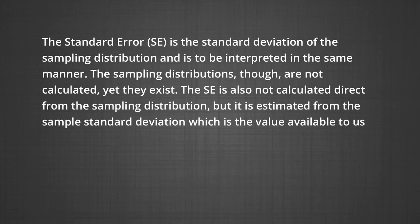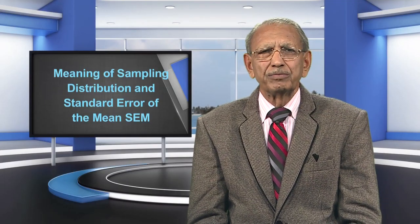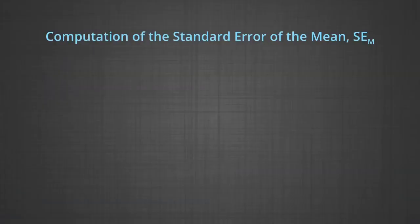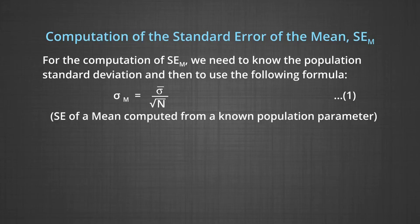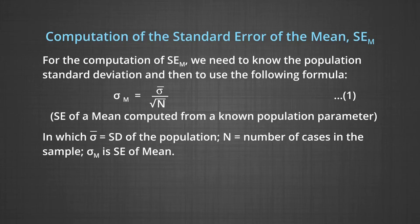Now I am going to show you the computation of the standard error of the mean, that is SEM. For the computation of SEM, we need to know the population standard deviation and use the following formula. The standard error of the mean is equal to the standard deviation of the population divided by the square root of n. This is the SE of a mean computed from a known population parameter, in which sigma-bar equals the SD of the population, n equals the number of cases in the sample, and SEM is shown as sigma-m.